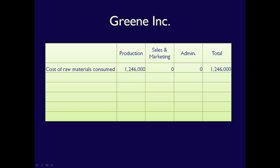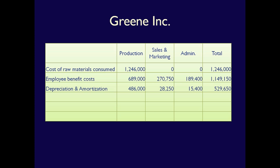The cost of raw materials consumed during production; employee benefit costs including wages, payroll taxes, healthcare costs, etc.; depreciation and amortization costs with regards to long-lived assets; utility costs for communication, water and electricity; and finally other expenses, which would include all other costs incurred to generate revenue.